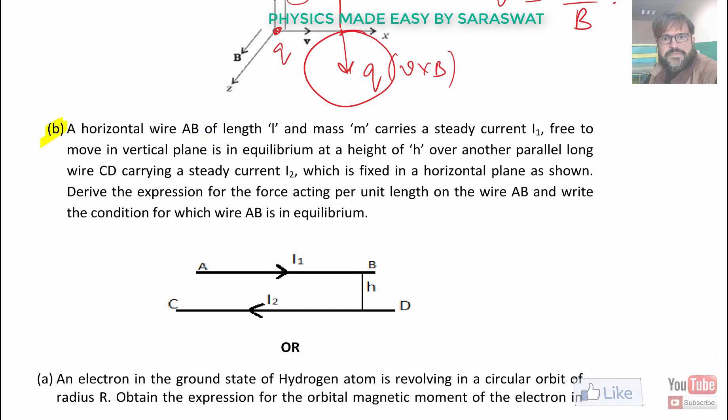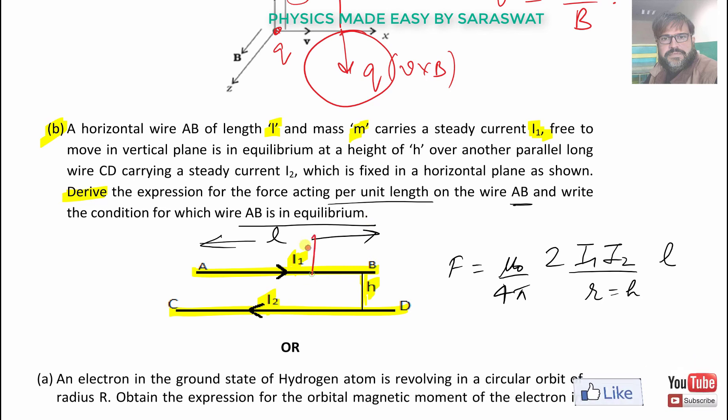B part. A horizontal wire AB of length L and mass M carries a steady current I₁, free to move in a vertical plane is in equilibrium at a height H over another parallel long wire CD carrying a current I₂ which is fixed in a horizontal plane as shown. Derive the expression for the force acting per unit length. The expression shall be μ₀/(4π) × 2I₁I₂/H × L per unit length. AB will be in equilibrium if the magnetic force Fₘ becomes equal to Mg.